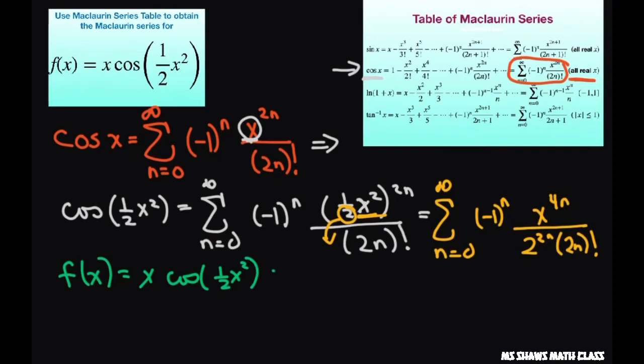So when you do that, we're going to multiply this through by x. So you're going to get the sum from n equals zero to infinity of negative one to the nth power. Our denominator stays the same.